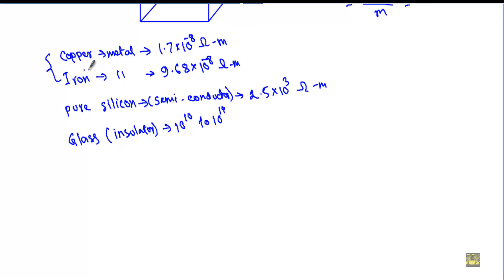The specific resistivity of metals is very small because they are good electrical conductors. In the case of insulators, the resistivity is very large as they hardly conduct any current. Therefore, the smaller the value of specific resistivity of a material, the better a conductor of current it will be.